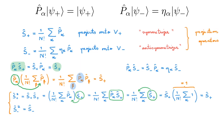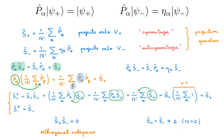Using a similar proof, we can also show that S-plus times S-minus equals zero, so they project onto orthogonal subspaces. Finally, adding S-plus and S-minus is not equal to the identity unless N equals 2. You can verify this by trying out the sum explicitly for the N equals 2 and N equals 3 cases. This means the two projectors do not project onto complementary subspaces.